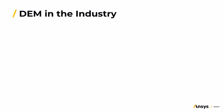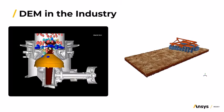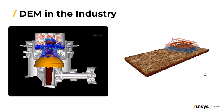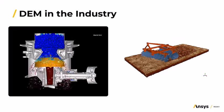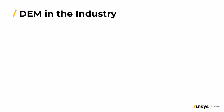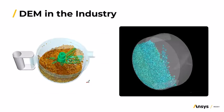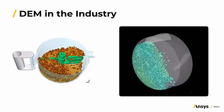And to finalize, here are some examples of DEM applications in different industries, such as mining and agriculture. In the food industry and pharmaceutical industry, using DEM helps on the optimization of processes.